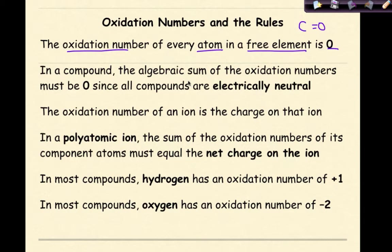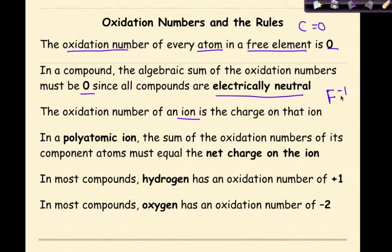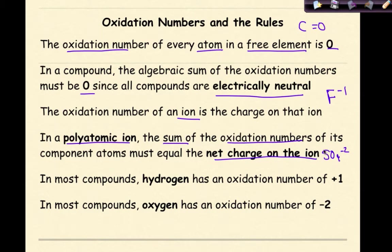In a compound, the algebraic sum of the oxidation numbers must be zero, since all compounds are electrically neutral. The oxidation number of an ion is the charge on that ion — for example, fluorine has a charge of minus one, so its oxidation number is minus one. In a polyatomic ion, the sum of the oxidation numbers of its component atoms must equal the net charge on the ion. For sulfate, SO4 minus two, the charges on sulfur and oxygen must sum to an overall charge of minus two, not zero.